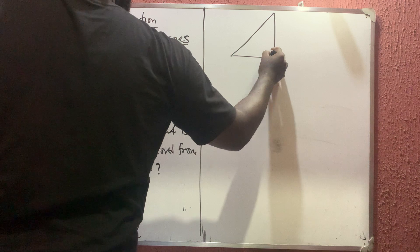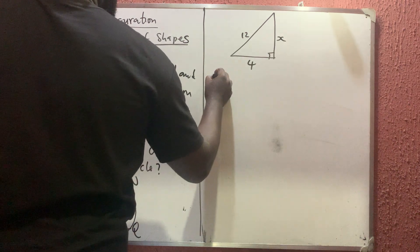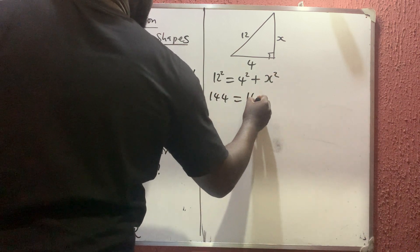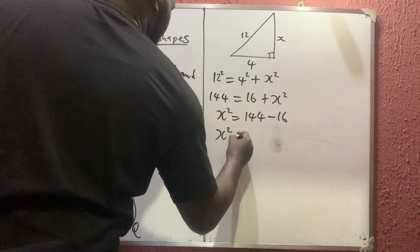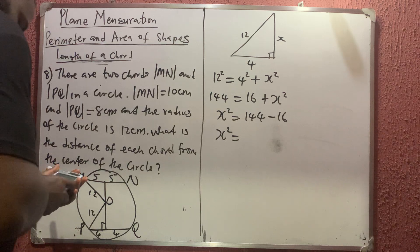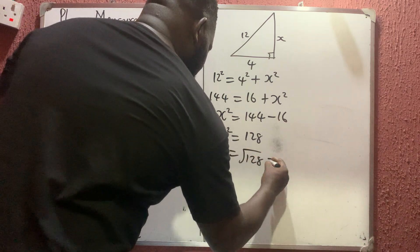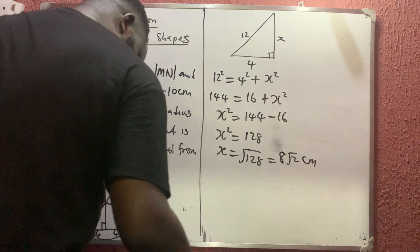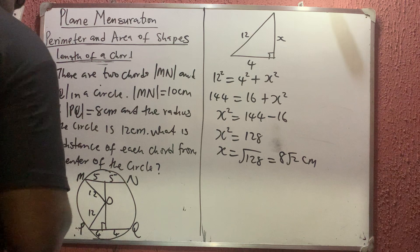For the first triangle, using Pythagoras: 12² = 4² + x², so x² = 144 − 16 = 128, therefore x = √128 ≈ 11.31 cm. That is the distance from the center to chord PQ.